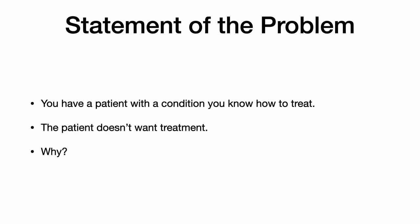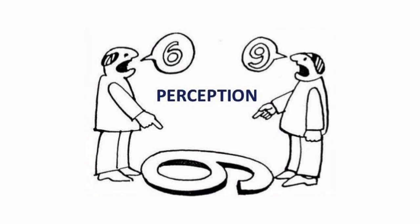We have to find an approach for against medical advice discharges that makes sense. Rather than looking at risk factors and demographics, a more logical way is to provide a statement of the problem. You have a patient with a condition you know how to treat, your patient doesn't want treatment — you have to ask yourself why. In most cases, the why leads to perception as the problem. Perception is when two people see the same thing but interpret it differently — like a nine that looks like a six from the other side.